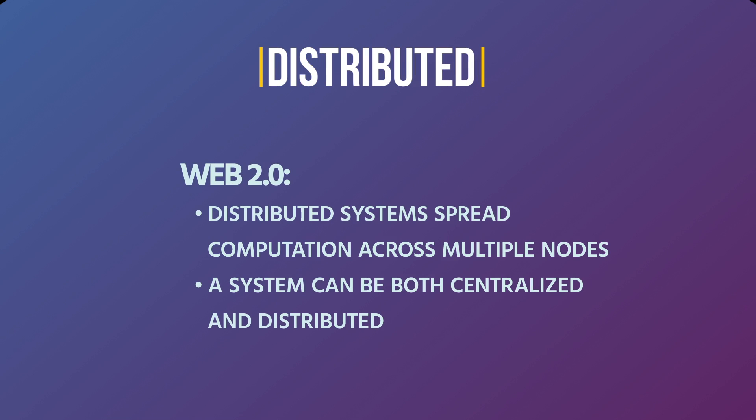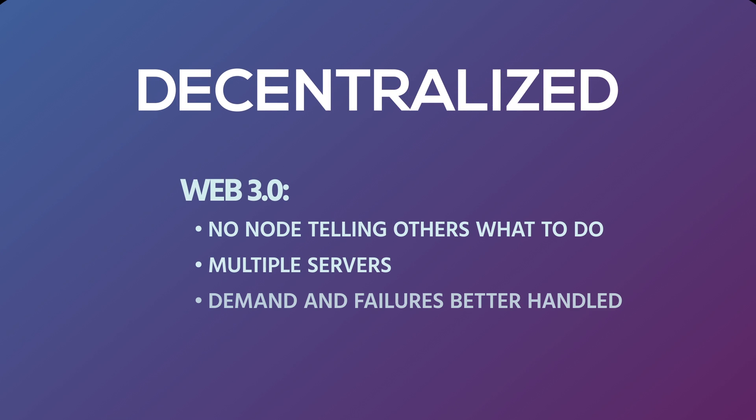A distributed system is what we have today — Google, Facebook, and Amazon are able to replicate their entire application stack across multiple data centers, but it's still completely centralized and controlled by those companies. With web 3.0, there's no single node telling any other one what to do. The best example of this that you've probably heard recently is Bitcoin.